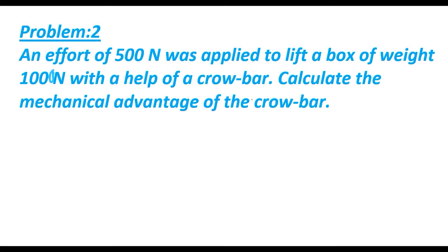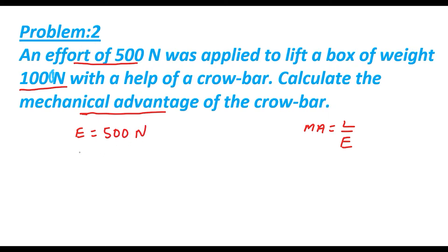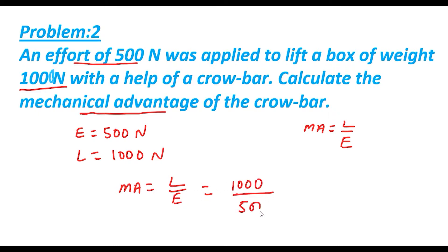Welcome to Nepal Digital Education. Let us look at Problem 2: an effort of 500 Newton was applied to lift a box of weight 1000 Newton with the help of a crowbar. Calculate the mechanical advantage. We know that mechanical advantage equals load divided by effort. Load is 1000 Newton and effort is 500 Newton, so mechanical advantage equals 1000 divided by 500, which becomes 2. This is the mechanical advantage of the crowbar.